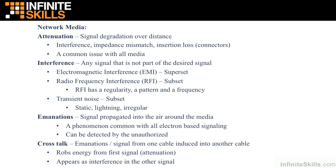Then we have another subset that is more of a transient noise — very irregular, staticky, no pattern, no regularity to the electromagnetic interference. Things like a lightning strike, or perhaps turning on a fan that uses an electric motor that induces some sort of static into our electrical system — this would be a type of transient noise, again a subset of electromagnetic interference. This is all bad for your data signal because it causes confusion in reading the binary ones and zeros out of the signal carrying your data.